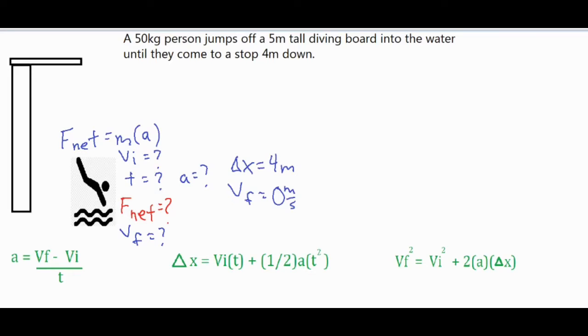It doesn't look like there's any way to solve for the amount of time it takes for the person to stop as we are right now with the variables that we have, but we can find the initial velocity diving into the water. The reason we can do that is because we know that the person goes off the diving board over here at zero meters per second.